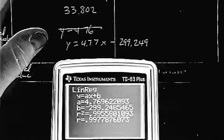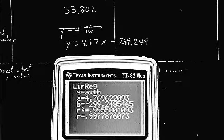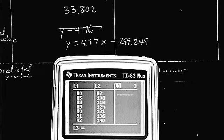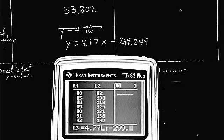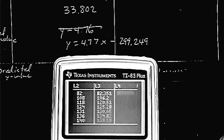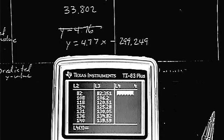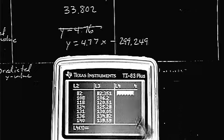So we need to go in to our lists. Go back up to the top of list three. And we're going to find the new predicted y values for this line. Since this is a better line than the other one. Okay. So we've got 4.77 times list one. Right. Because list one is where my x's are. Minus 299.249. Enter. Okay. So those are all my deviations. Or I'm sorry. Those are all my predicted y values.